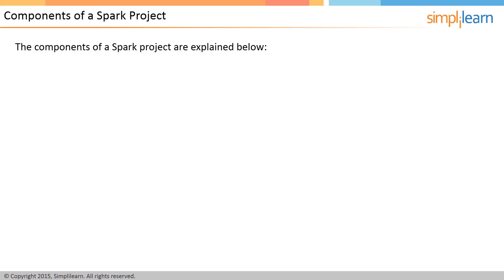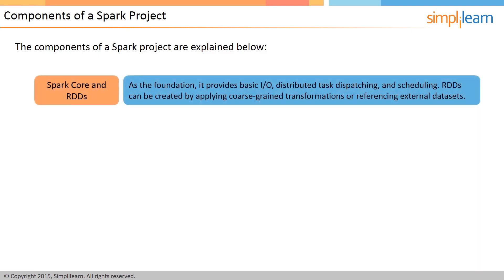The components of a Spark project are listed on the screen. The first component is Spark Core and RDDs, which is the foundation of the entire project. It provides basic input-output functionalities, distributed task dispatching, and scheduling.